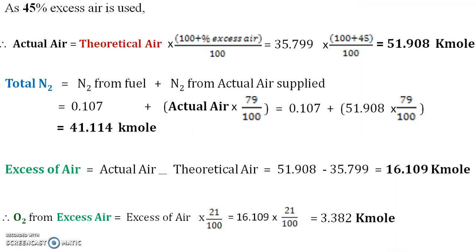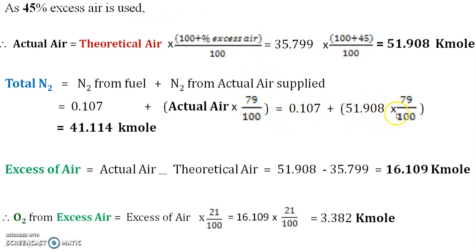Now we calculate the total nitrogen, which is the quantity obtained both from the fuel and from the actual air supplied. If the fuel contains any nitrogen, it will appear in the product. The nitrogen present in the actual air is also available as a flue gas product. To calculate nitrogen from the actual air, multiply the actual air by the ratio 79/100, since air is 21% oxygen and the remaining 79% is considered nitrogen. Adding both quantities gives the total nitrogen in the flue gases.